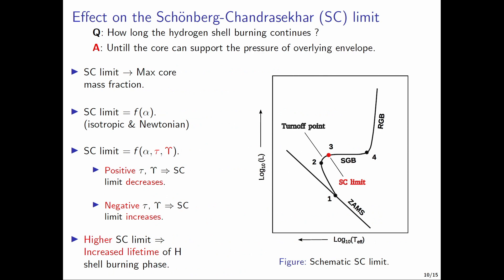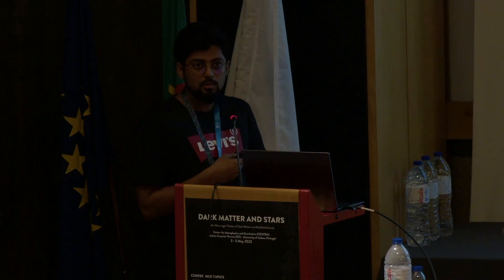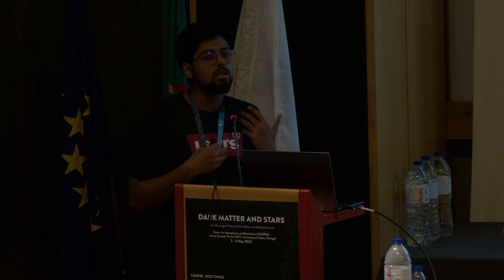The shell hydrogen burning phase continues until the core mass fraction reaches the maximum limit which is called the Schoenberg Chandrasekhar limit, beyond which the core can no longer withstand the pressure of the overlying envelope. We obtained a master formula for this Schoenberg Chandrasekhar limit in the presence of modified gravity theories and anisotropies, and we found that positive values of these parameters lead to a decrease in the Schoenberg Chandrasekhar limit while negative values result in an increase. One immediate physical consequence of the change in the Schoenberg Chandrasekhar limit would be the time spent by the star in the shell hydrogen burning phase.